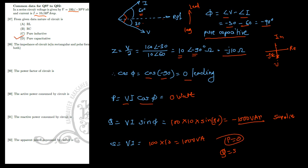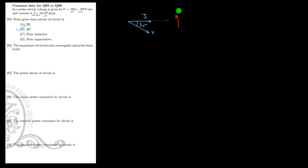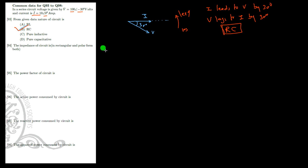The next question is for you. The voltage is 100∠−30° and the current is 10∠0°. Here you can observe that the current leads the voltage by 30°, which is only possible in an RC circuit. So the nature of the circuit is RC. Please calculate the impedance, power factor, active power, reactive power, and apparent power by referring to the previous problems, and post your answers in the comment box.